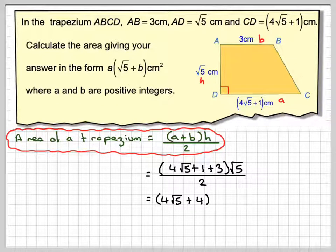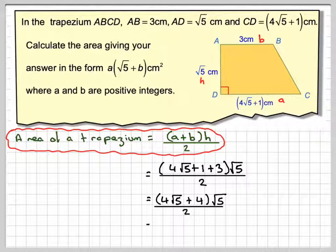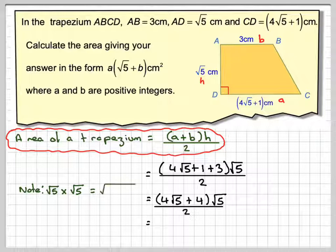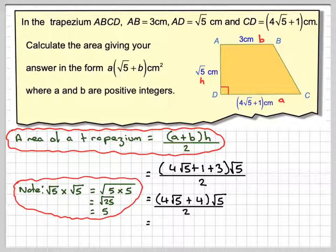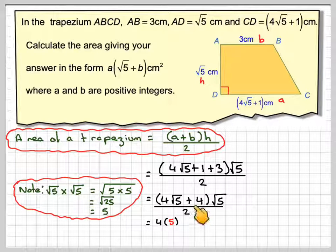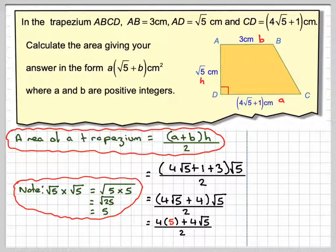First, simplifying: 1 plus 3 is 4. Now multiplying by root 5 — root 5 times root 5 is root 25, which is 5. So this becomes 4 times 5, plus 4 root 5, divided by 2.